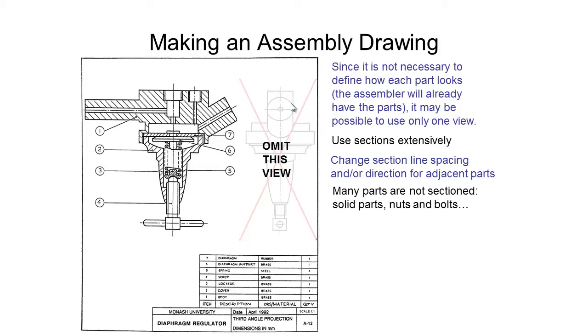Many parts we look at in our assembly drawings are not sectioned, so solid parts, so things like our nuts and bolts or any pins and keys or other little things that might be a part of our assembly drawing.